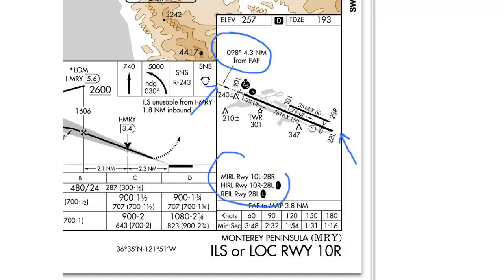Next, we have the lighting systems for the runways. Each runway with different lighting is listed. In this case, there's medium intensity runway lighting on runway 10L/28R, high intensity runway lighting on runway 10R/28L, and runway end identifier lights on runway 28L. As with the negative symbology above, the two negative L's indicate that those lights are pilot controlled.